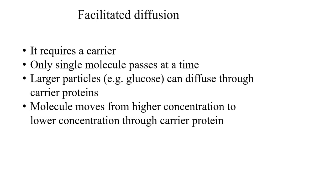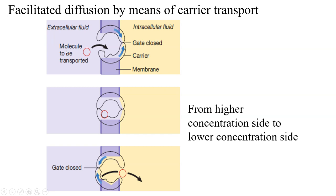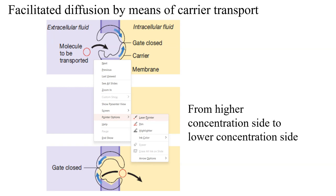Summary of facilitated diffusion — they require a carrier. Only a single molecule passes at a time from one carrier. Larger particles can diffuse through carrier protein, and these are water-soluble molecules. Molecules move from higher concentration to lower concentration through the carrier protein. They do not require energy. When a molecule approaches, it binds to the carrier protein's binding site, then molecular configurational change takes place in the carrier protein, moving the molecule from one side to another.